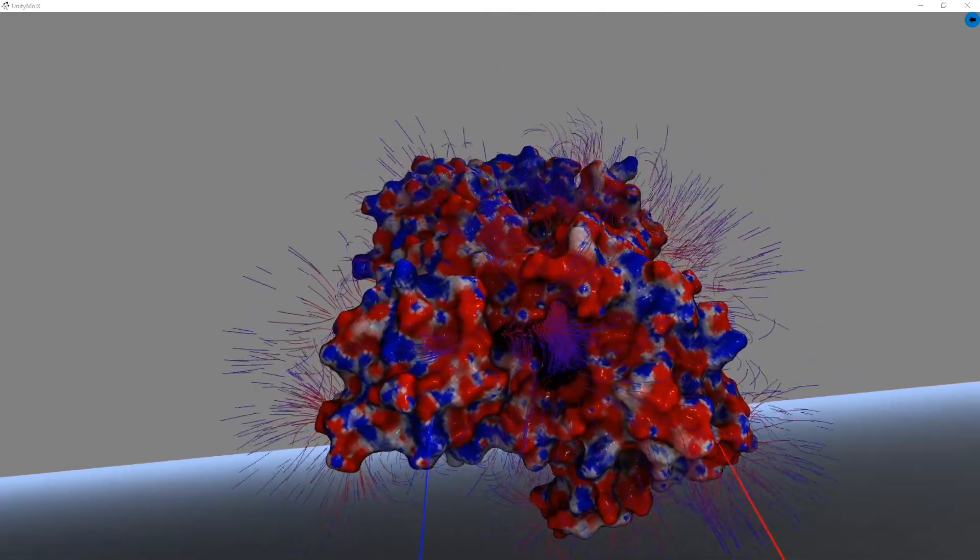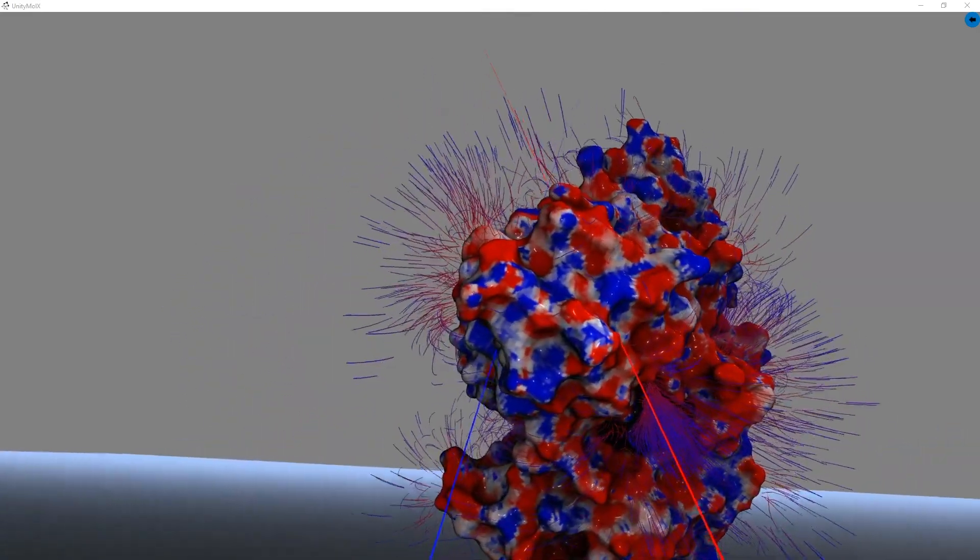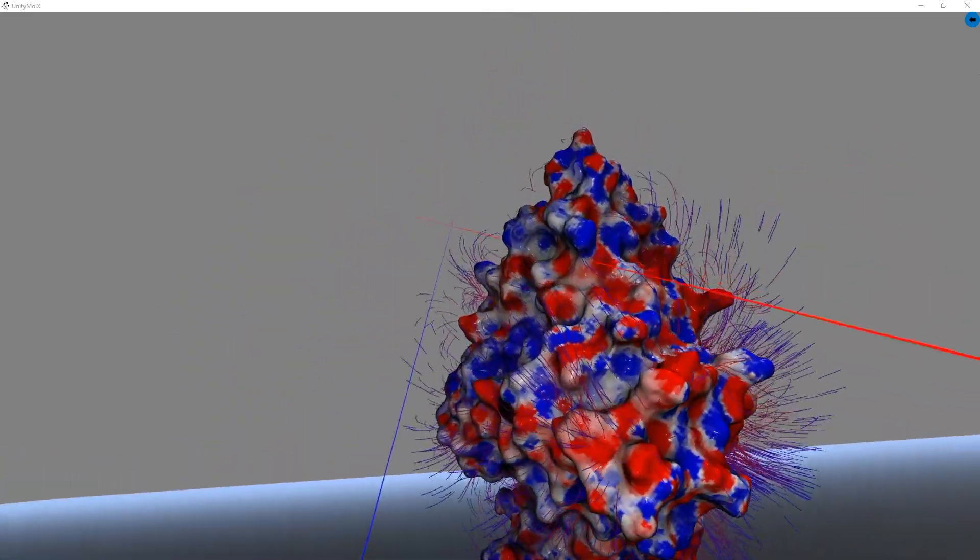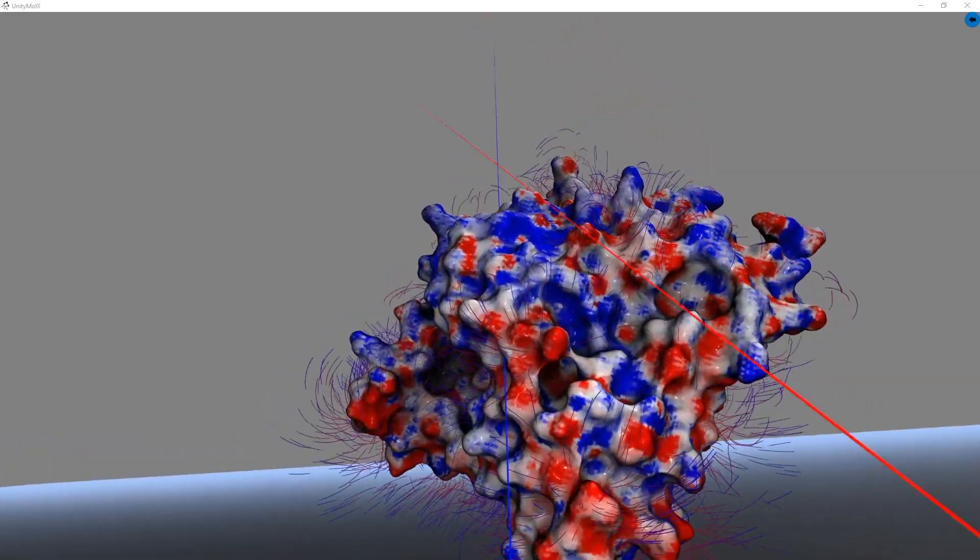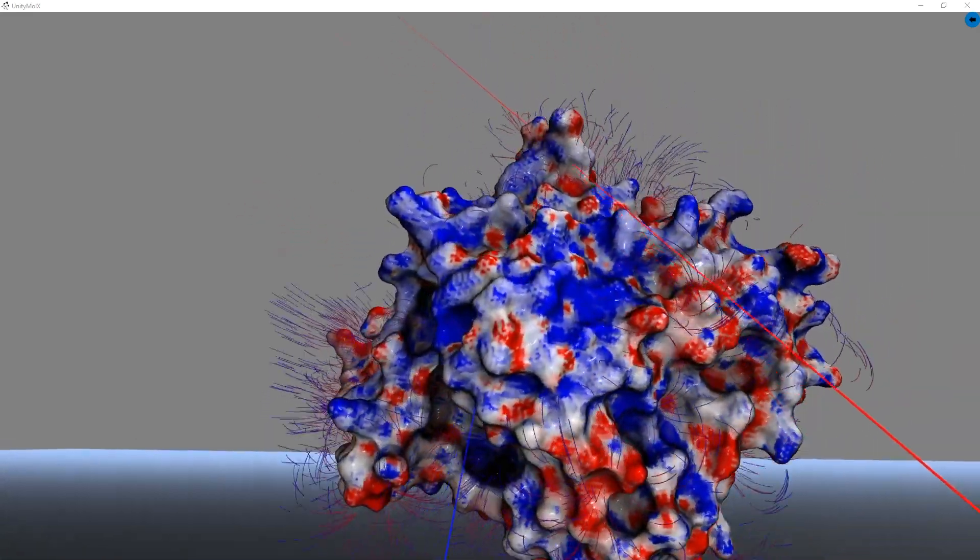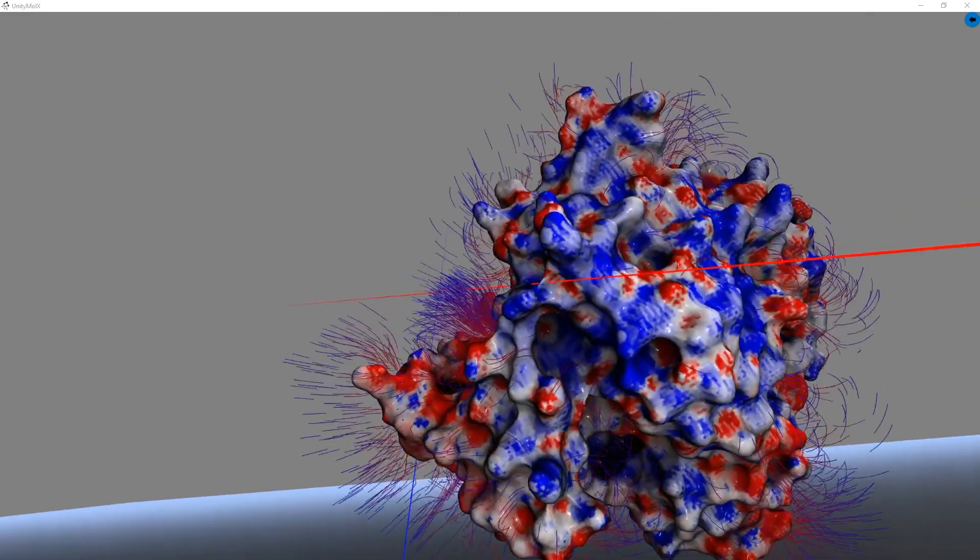The output file from APBS is a DX file, which UnityMole can then read to calculate and color the surface by the electrostatic potential, and also to calculate the electrostatic field lines.